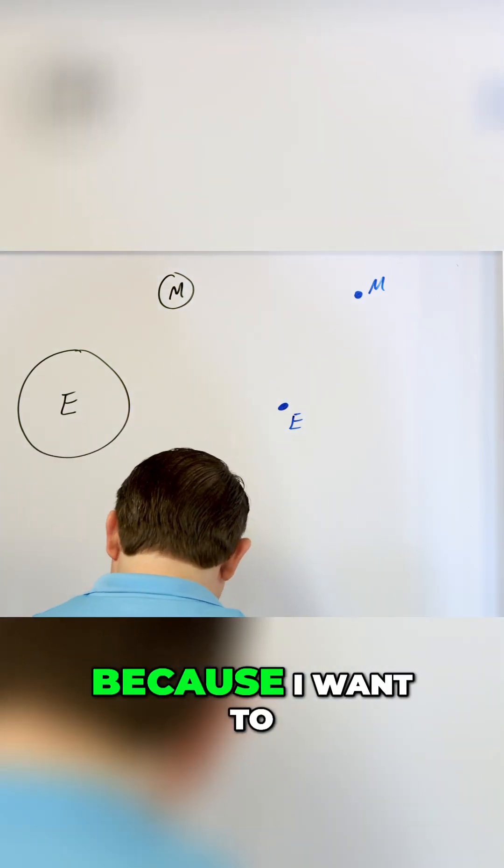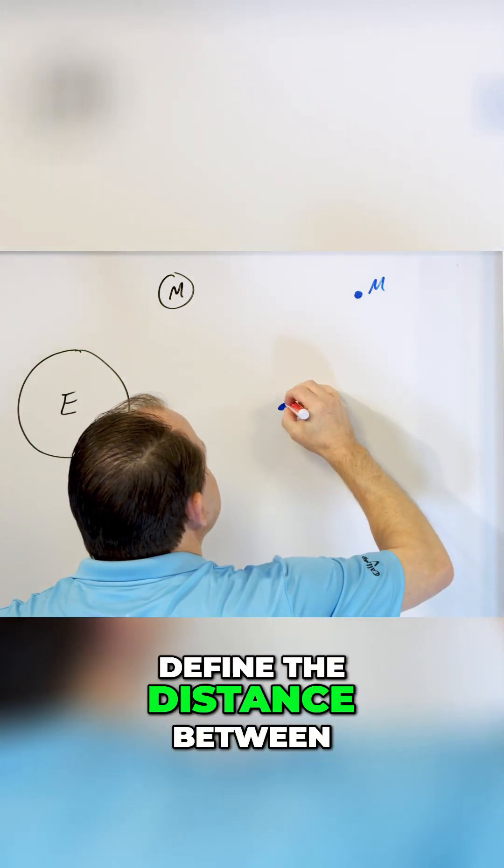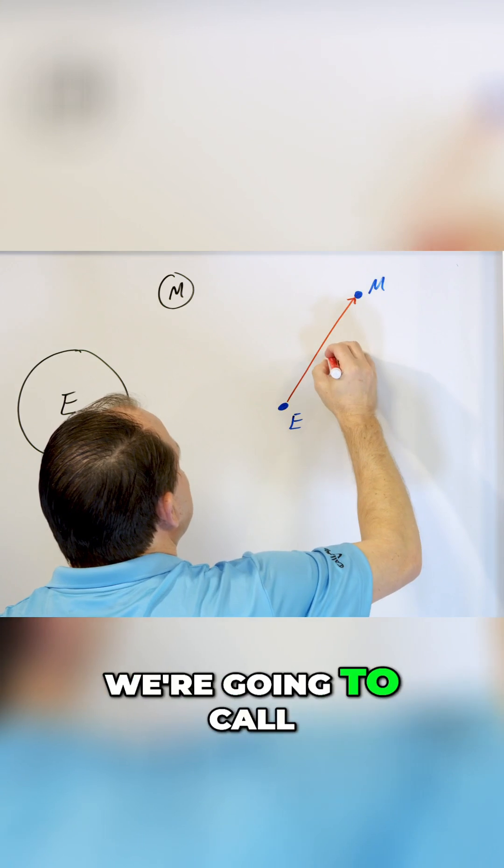Now, why am I doing that? Because I want to define the distance between the Earth and the moon, we're gonna call it R.